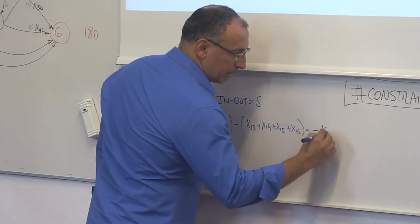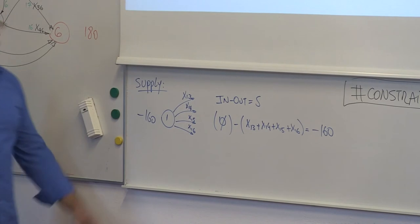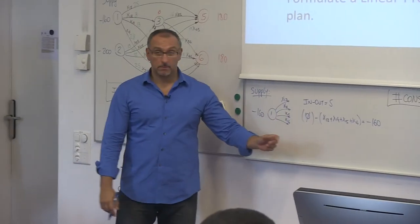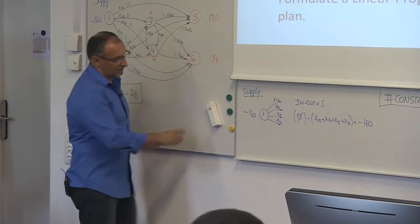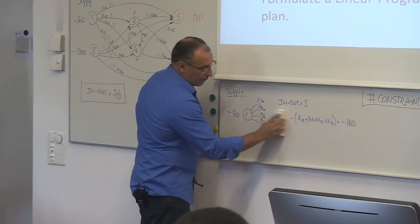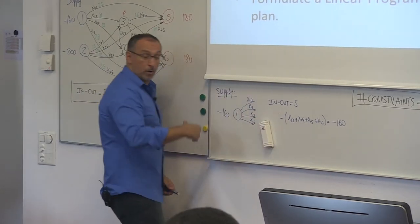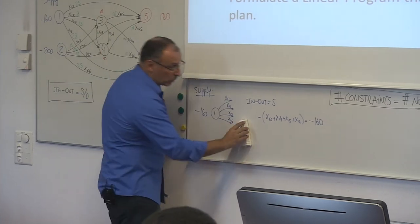So I'm going to do a little trick here. Zero goes away, I'm multiplying both sides by minus one.